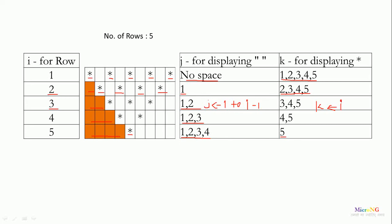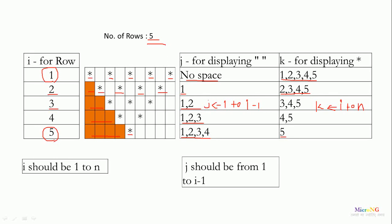Now, what is the relationship between i and k? The value of k always starts from the value of i. For example, look at the third row — the value of k starts from 3 and goes up to the value of n, where n is the number of rows to be printed. So k should go from i to n for printing the number of stars, followed by one space.